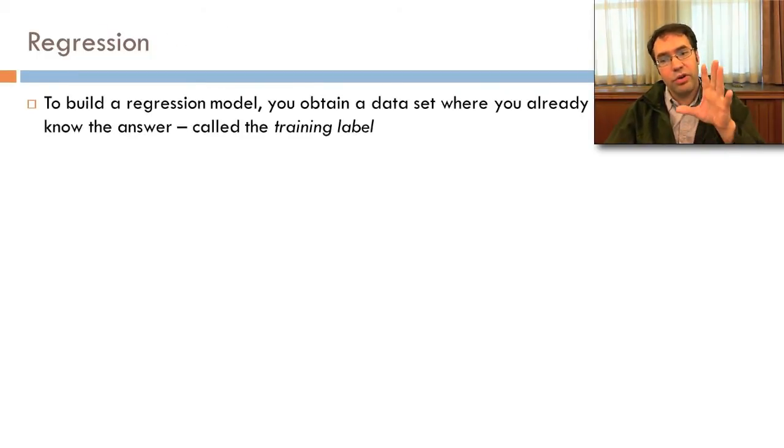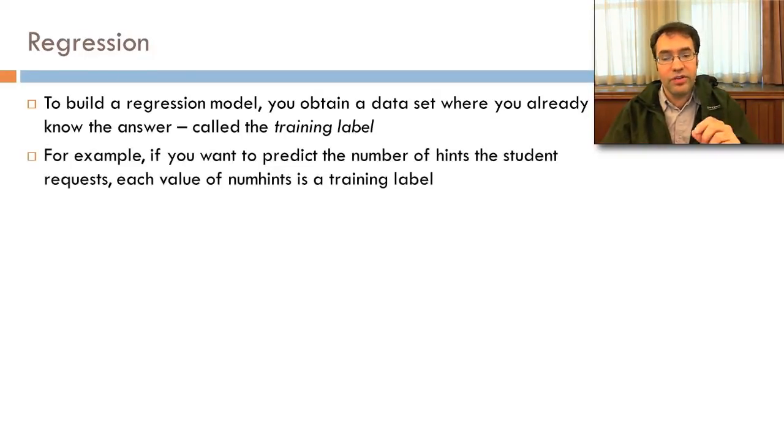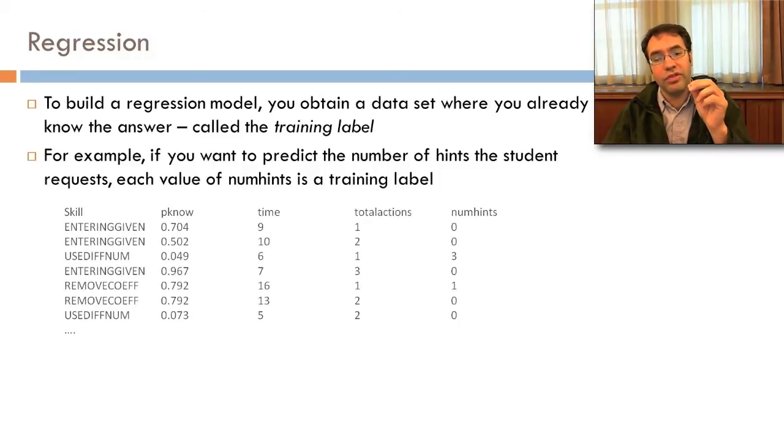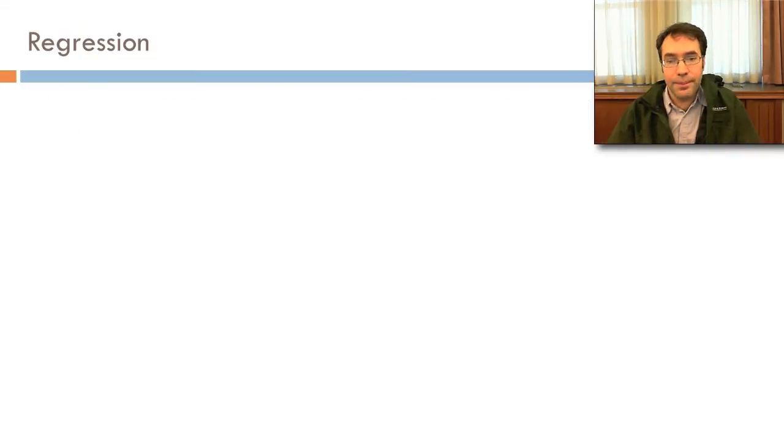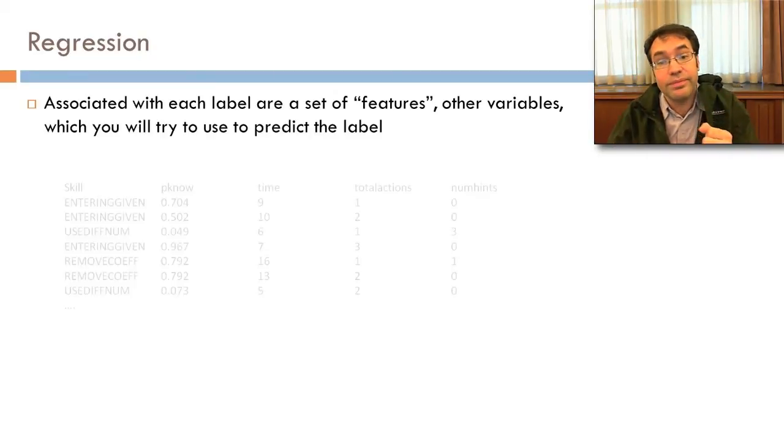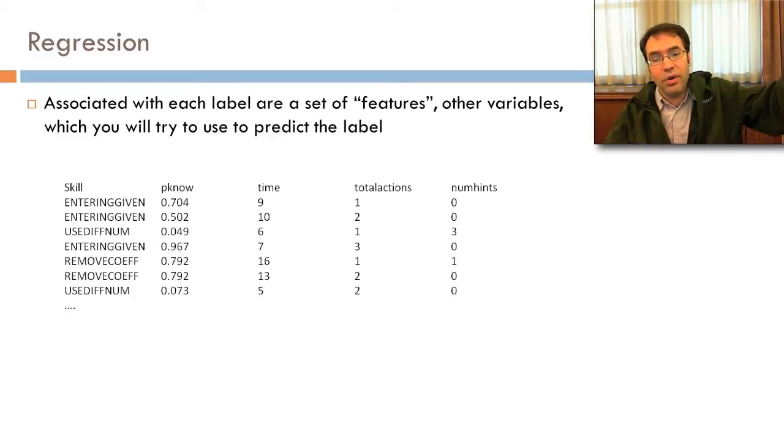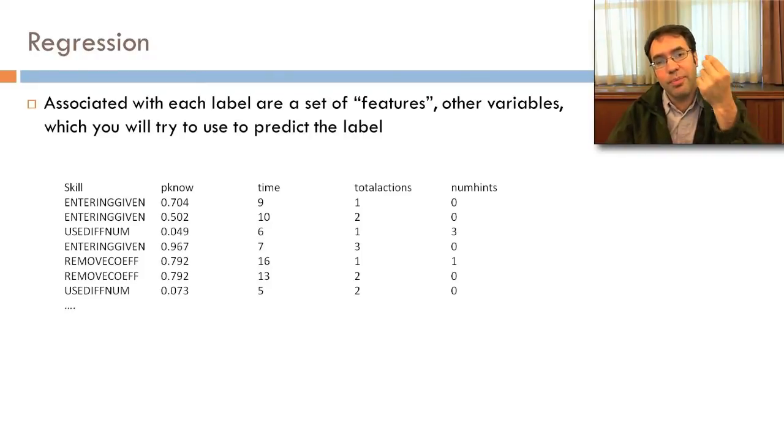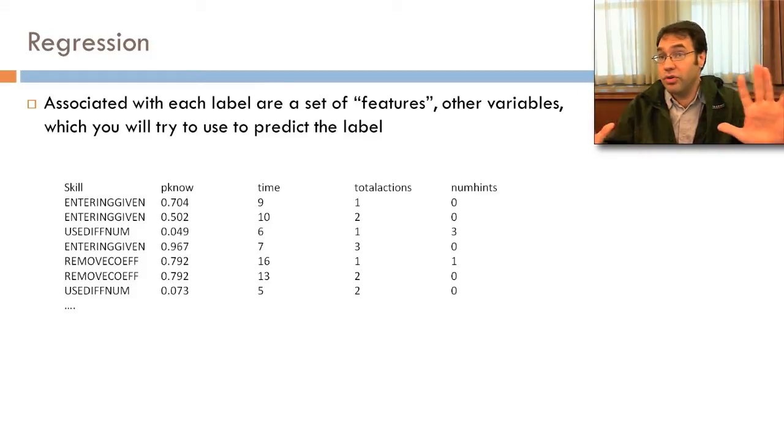To build a regression model, you obtain a data set where you already know the answer. And that answer we call the training label. For example, if you want to predict the number of hints the student requests, over here to the right, each value of num hints is the training label. Associated with each label are a set of features. Other variables, the predictor variables, which you'll try to use to predict the label. So here you see that p_no, time, total actions, and maybe skill as well, are predictor variables. The predicted variable, which you have labels for, is num hints. And you use those labels to try to build a model, so that then you can predict the value when you no longer have those labels.